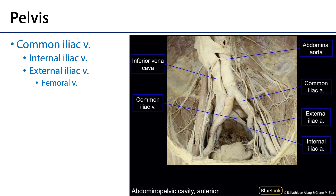Regarding the pelvis: the inferior vena cava receives the right and left common iliac veins. Those common iliac veins are where the external and internal iliac veins coalesce. The internal iliac veins drain the pelvis, the perineum, and the external genitalia if present. The external iliac veins are continuations of the femoral veins that drain the lower limbs.